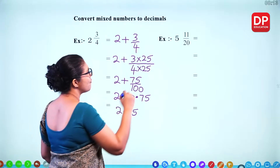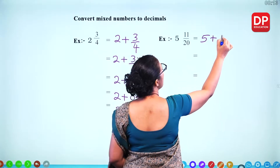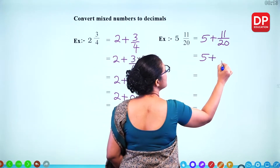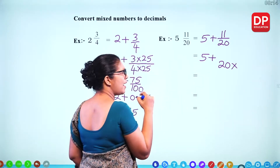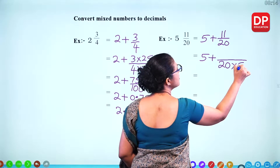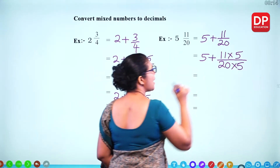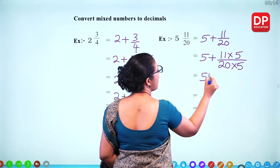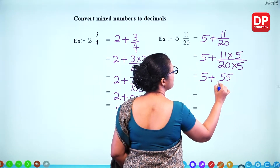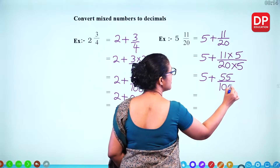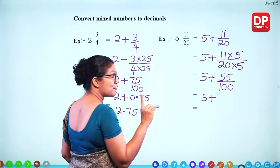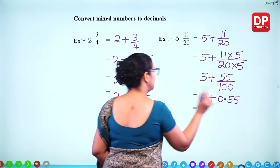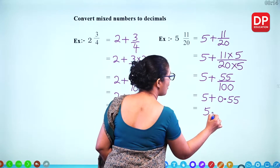For 5 and 11 over 20, the whole number is 5 and the fractional part is 11 over 20. Multiply by 5 to get 100: 11 times 5 is 55, and 20 times 5 is 100. So 55 over 100 = 0.55. When you add these, you get 5.55.